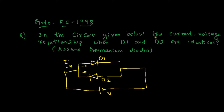Hello all. Welcome to the new video on signals and systems. In this video and in the next couple of videos, we will be solving problems related to diodes — what happens when diodes are in series and what happens when diodes are in parallel, what is the current through them and what is the voltage across them.